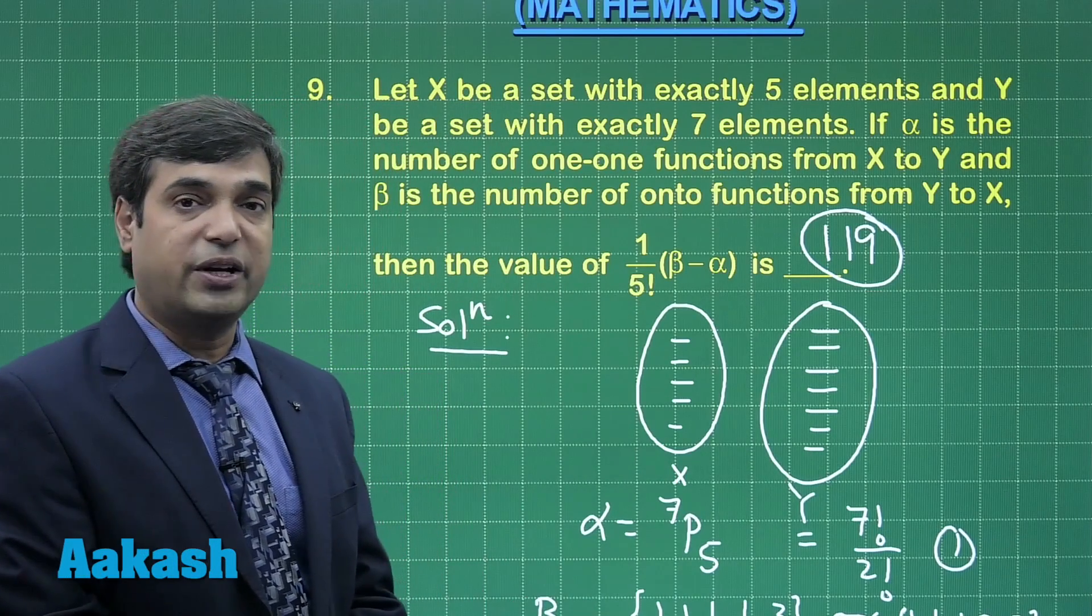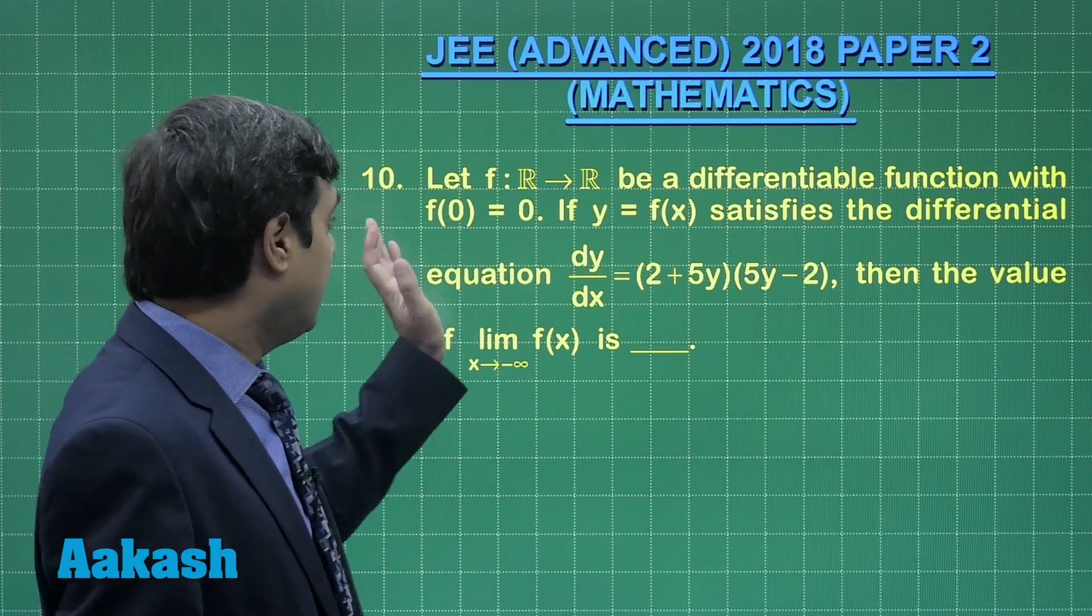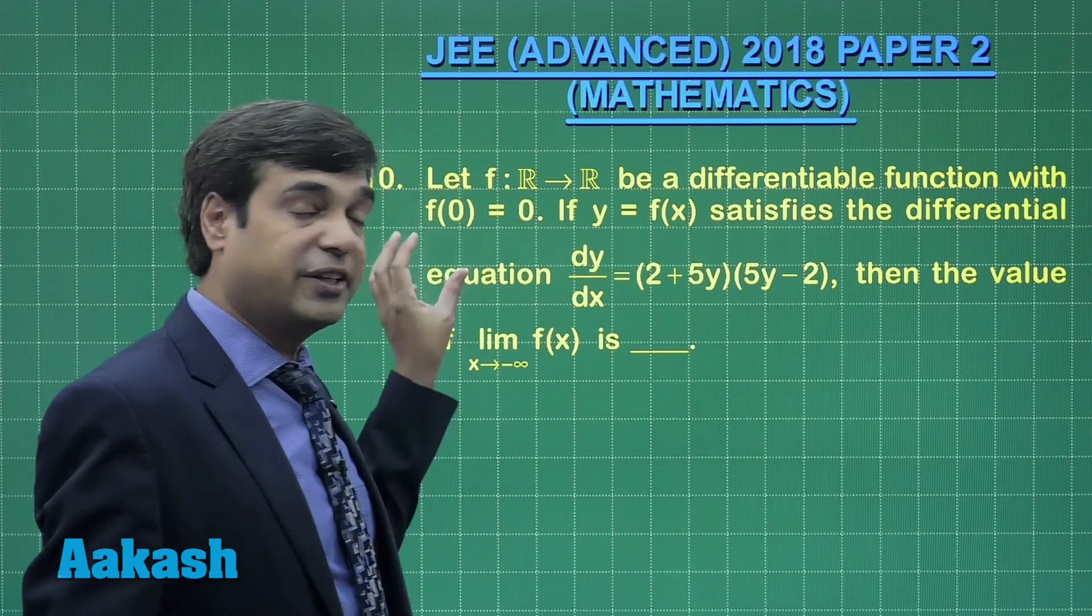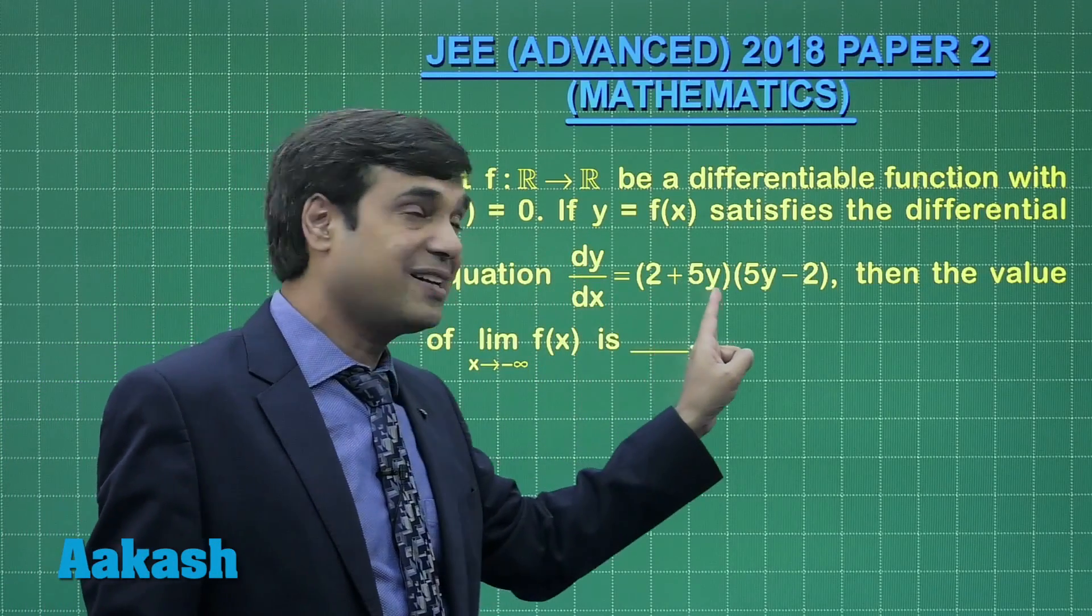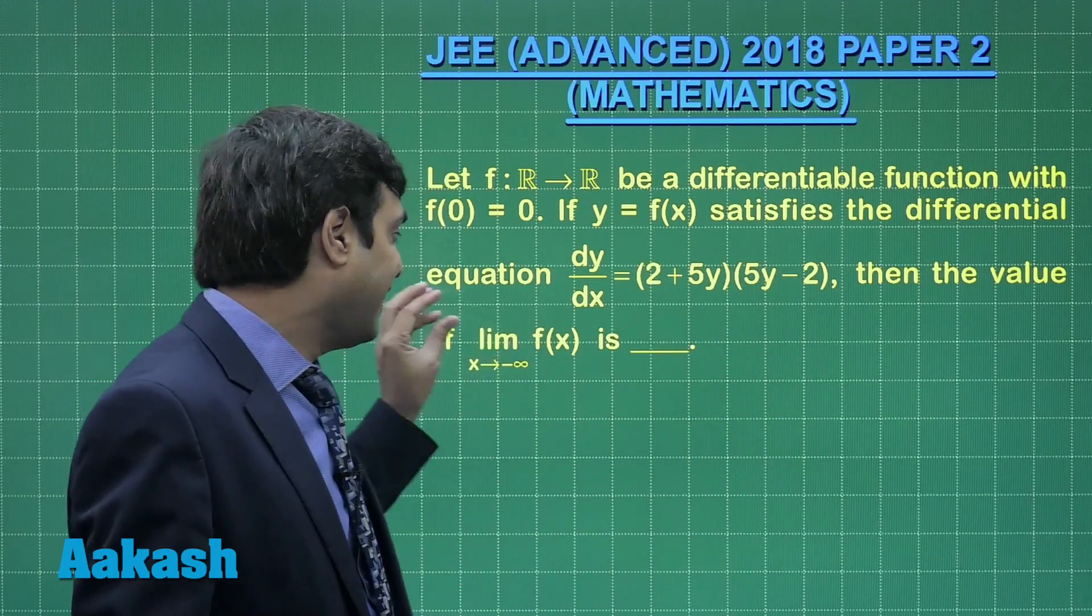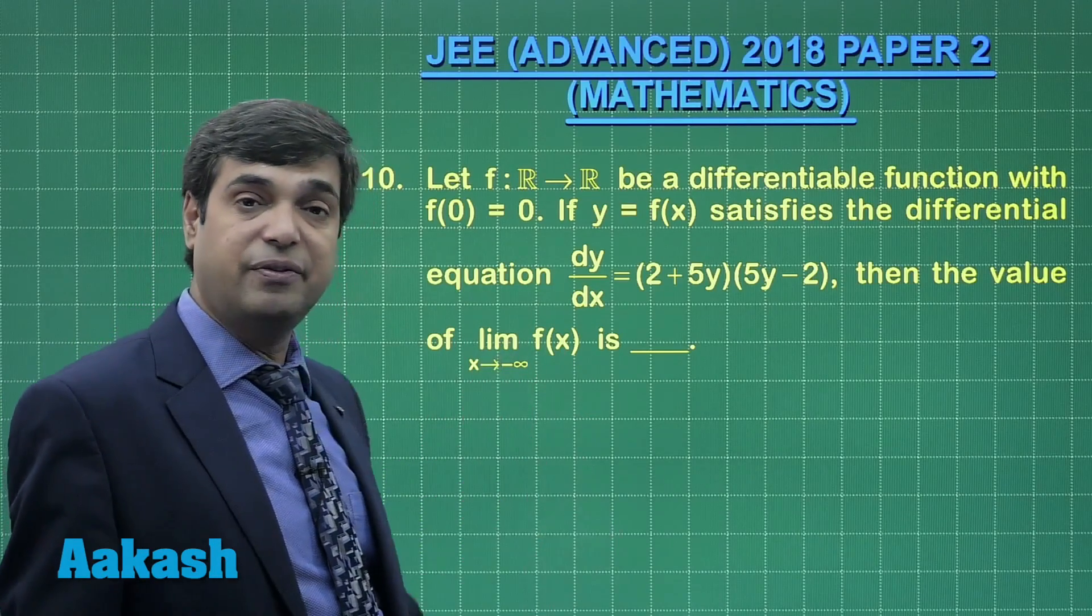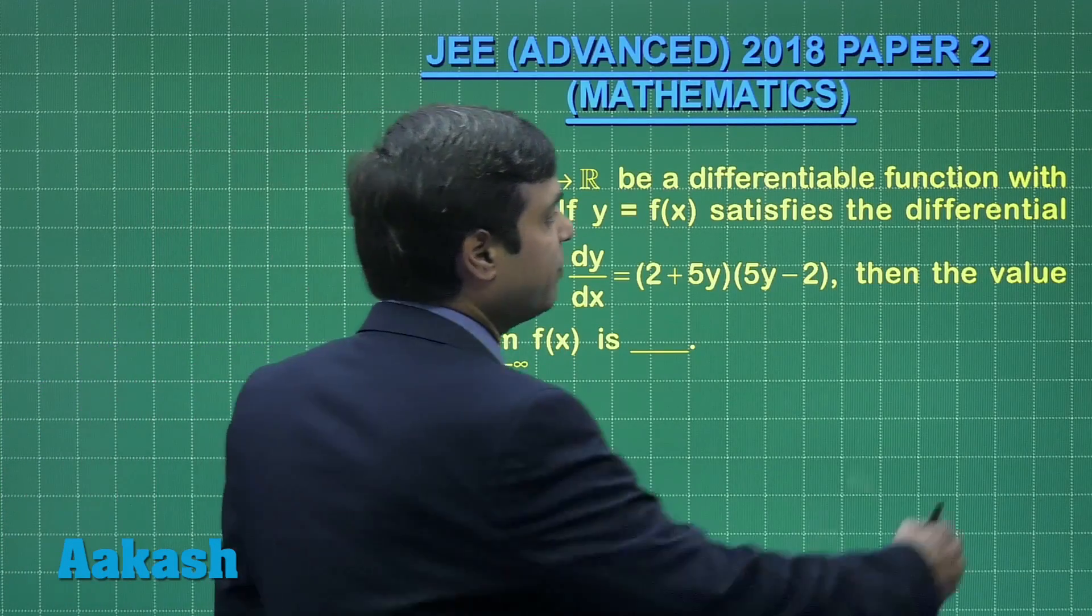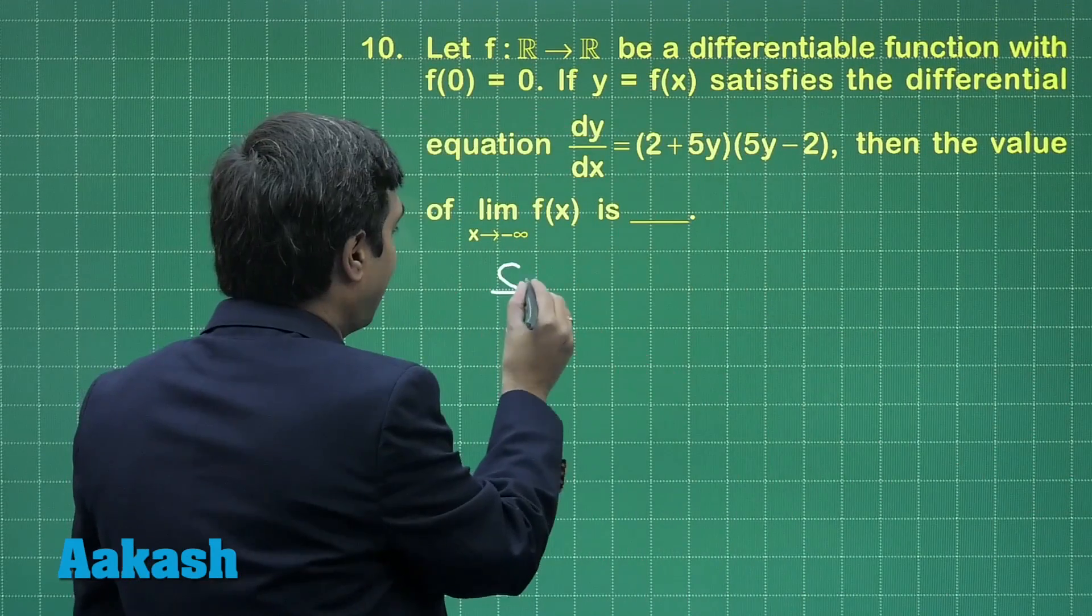Moving to question number 10, let f be a differentiable function with the constraint f(0) equals 0 and satisfying the equation dy/dx equals (2 + 5y)(5y - 2). Then we have to find the value for limit x approaching to minus infinity f(x).